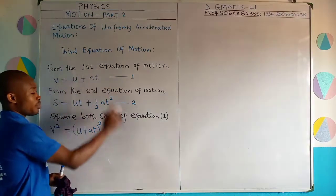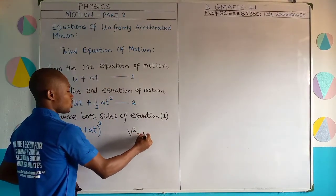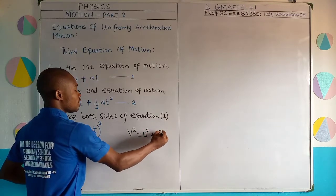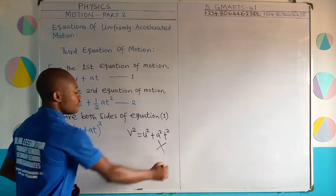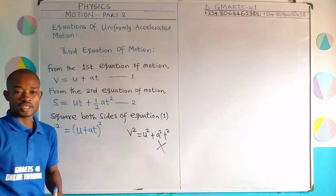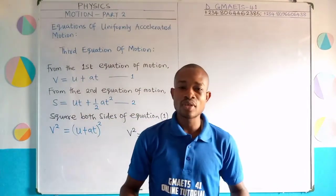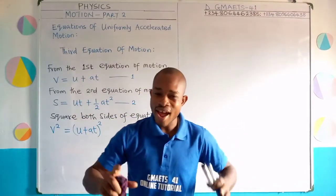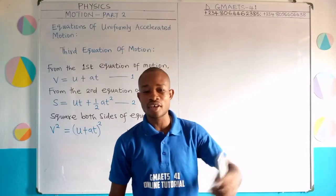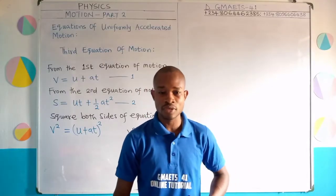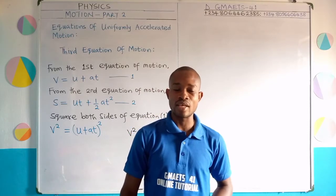When you hear 'square both sides,' you're not going to do V squared equal to U squared plus A squared times T squared. This is very wrong. And that is why GMATS 41 will always advise any science student, whatever course you want to study in a higher institution, to make sure you take mathematics seriously.